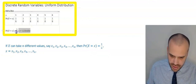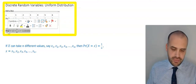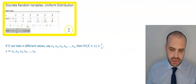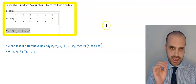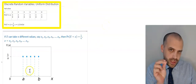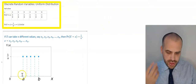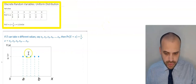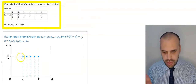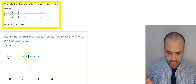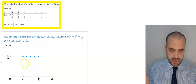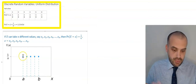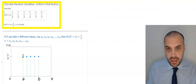This is what we're aiming for in any uniform distribution — a nice, neat expression. A uniform distribution will look like this, because the probability of every value between a and b is going to be the same: 1 on n.